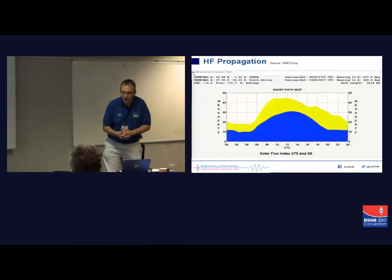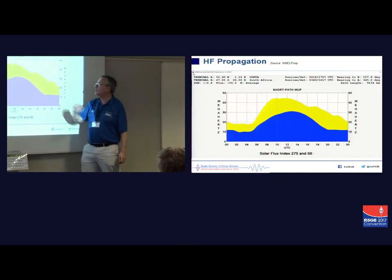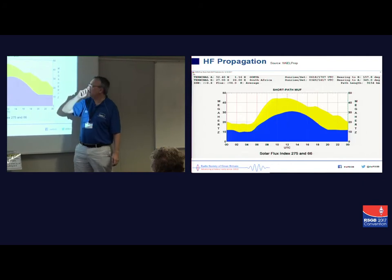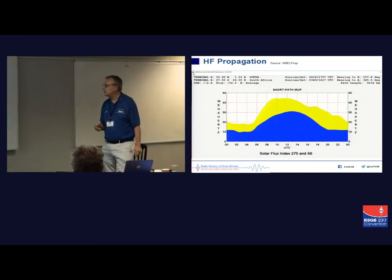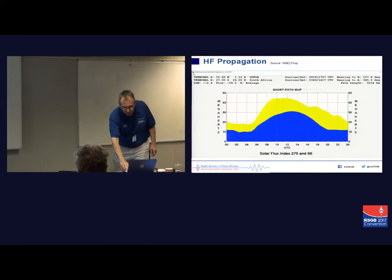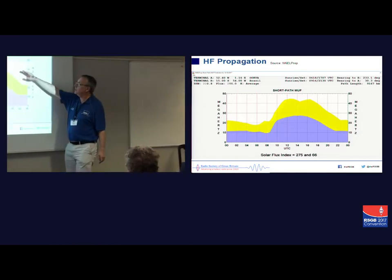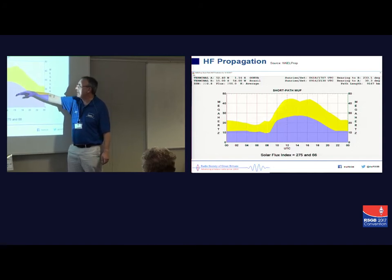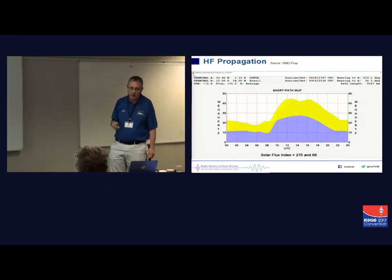Looking at a north-south path from my QTH to South Africa: at sunspot maximum, the maximum usable frequency exceeds 40 MHz, so you could work right down into South Africa around the lunchtime period. Are we going to get that? No. But you may find some 10 metre openings into South Africa even at sunspot minimum, and 15 and 12 metres might still be open on that path in 2019. For the UK to Brazil path: at sunspot maximum with a solar flux index of 275 it was very easily open on 10 metres and higher, but at solar minimum you're going to be looking at 15 metres, maybe 12 metres, with the odd occasional 10 metre opening on the north-south path.